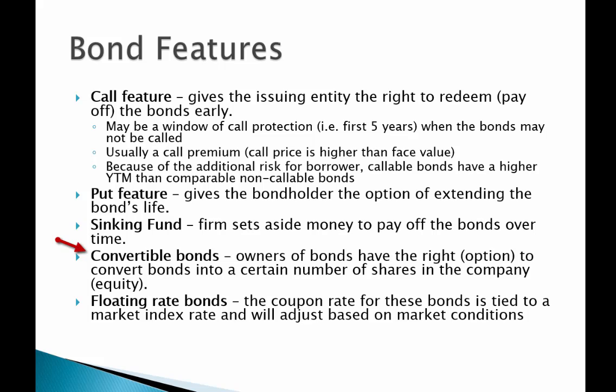Convertible bonds are a type of bond where the owners — people lending money to companies — have the right or option to convert bonds into a certain number of shares in the company. Convertible bonds start out as debt, but if the stock circumstances turn out favorable for the lender, they may convert that debt to equity and enjoy upside from sharing in the company's good fortunes.